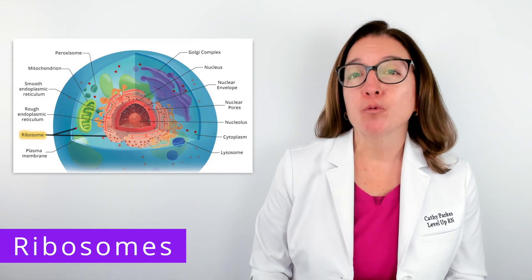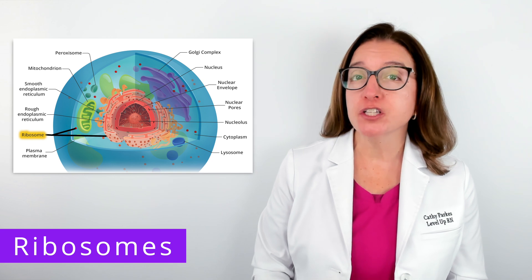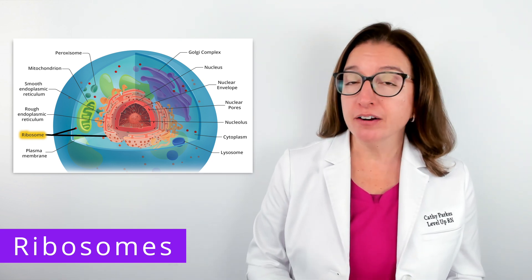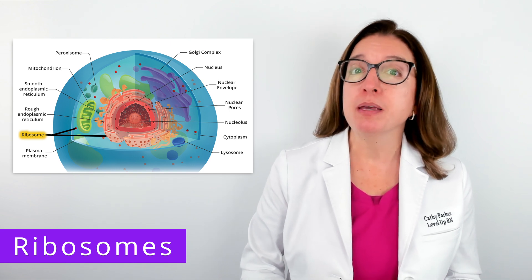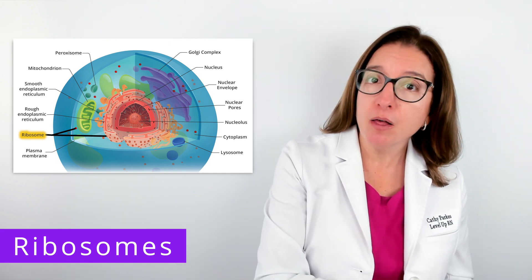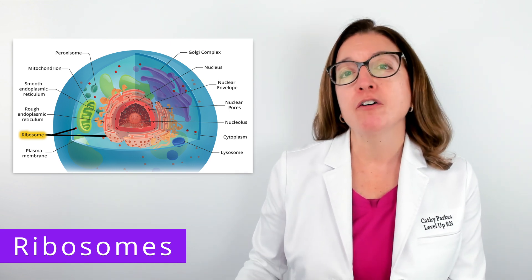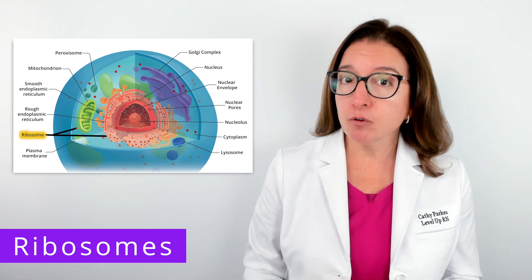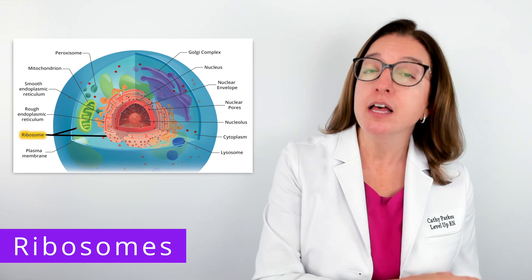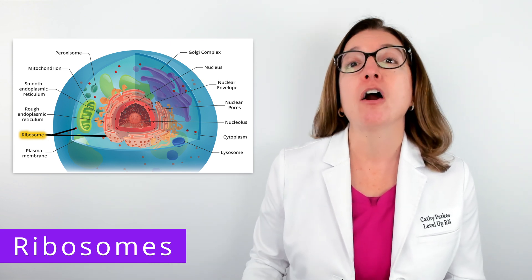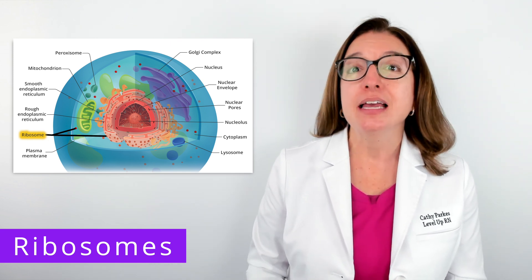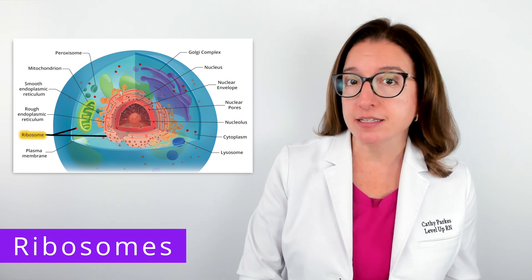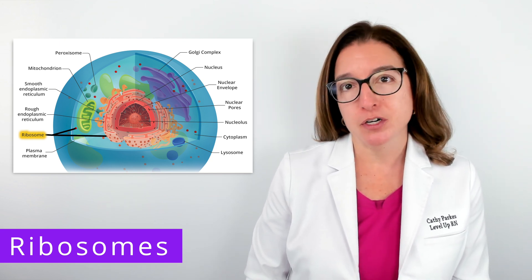Next, we're going to talk about ribosomes, which are the structures in the cell responsible for protein synthesis. In a eukaryotic cell, ribosomes may be freely floating in the cytosol or be bound to the rough endoplasmic reticulum. Unlike prokaryotic ribosomes, which are 70S ribosomes, eukaryotic ribosomes are 80S ribosomes. Each 80S ribosome consists of a small 40S subunit and a large 60S subunit.